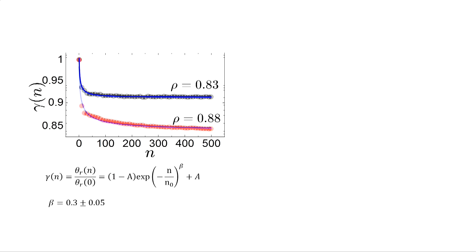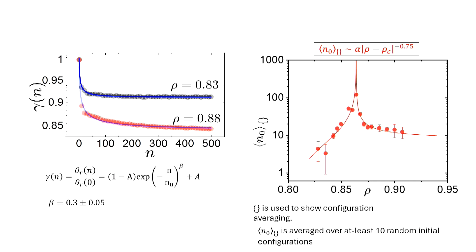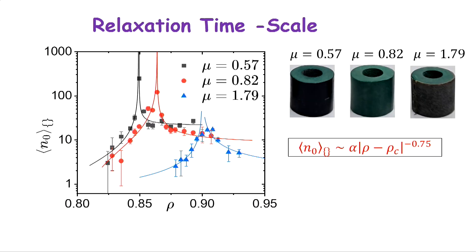You can measure gamma-n, which is theta-r divided by theta-r at n equals zero. This gives a stretched exponential decay with a beta of 0.3. As a function of density, you get some kind of dynamical transition where at some point many more cycles are needed before the system reaches steady state.